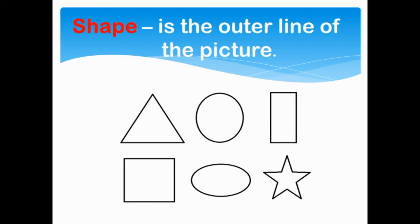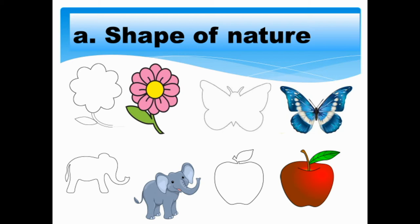There are two types of shapes. First is shape of nature, and those are flowers, insects, animals, fruits, and humans.